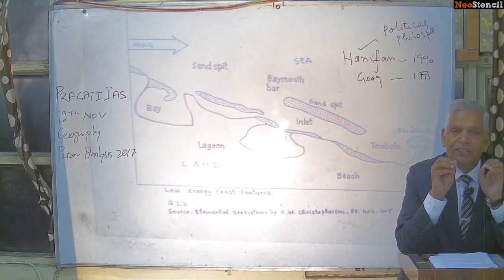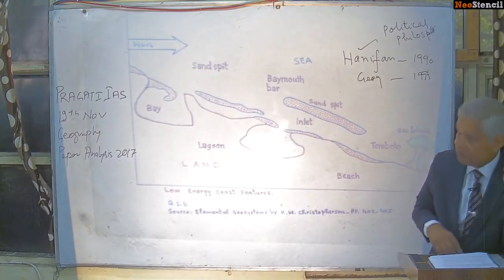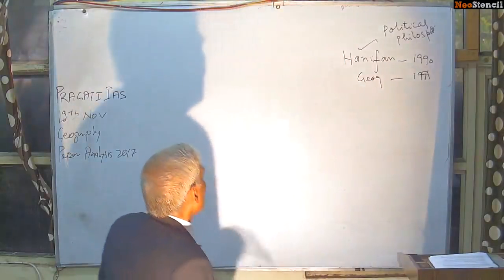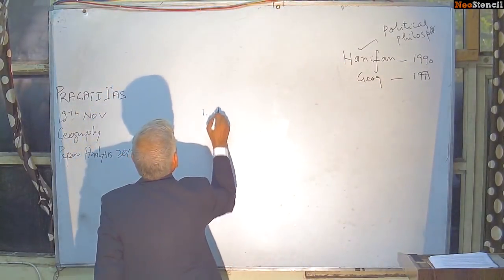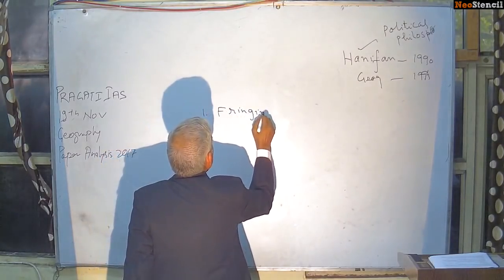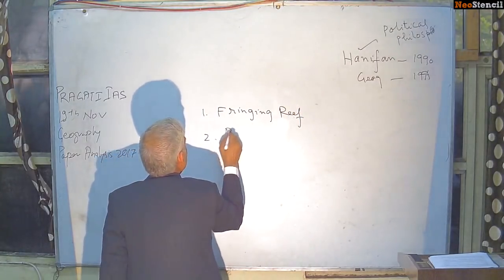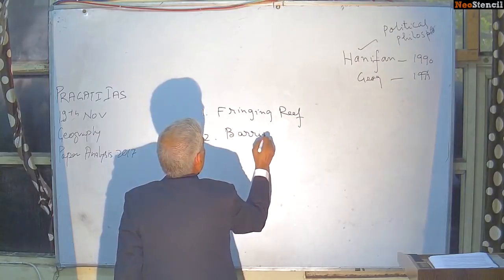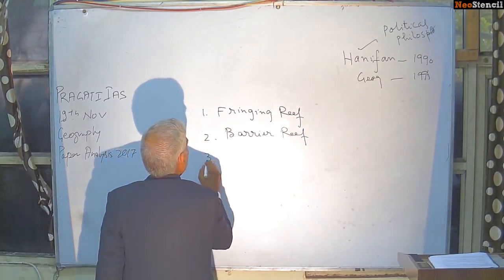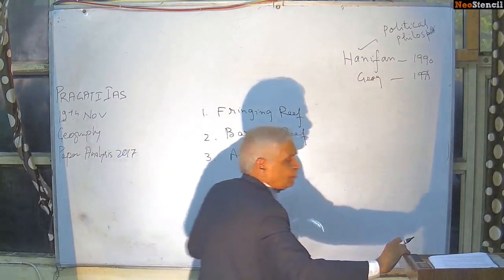Coral is an insect that creates rocks, and these rock formations are of three types: fringing reef, barrier reef, and atolls.